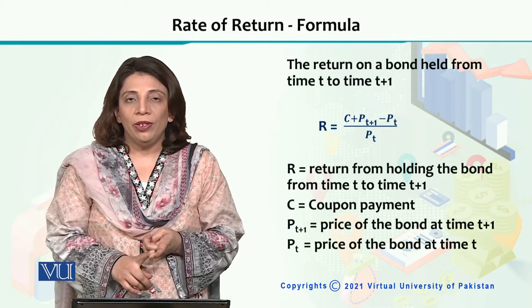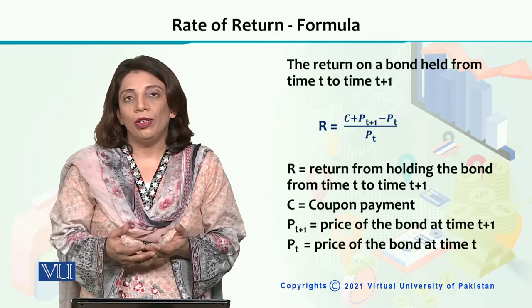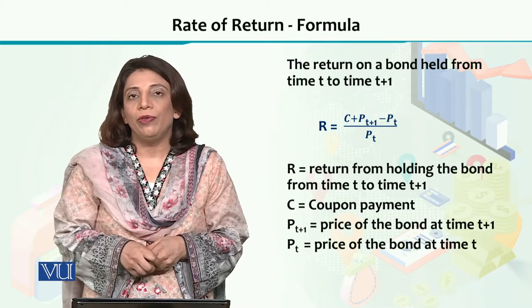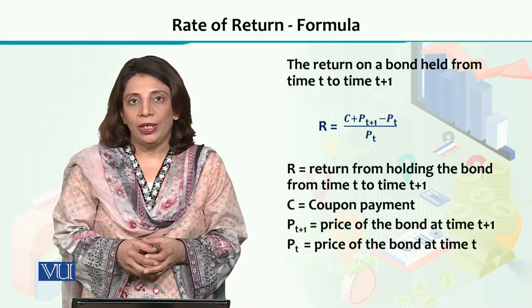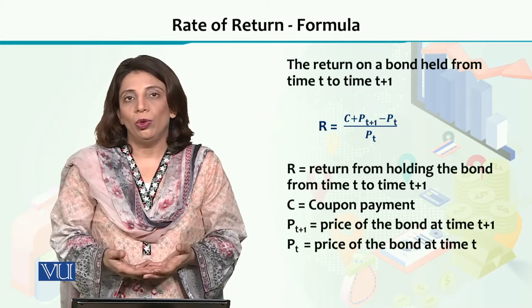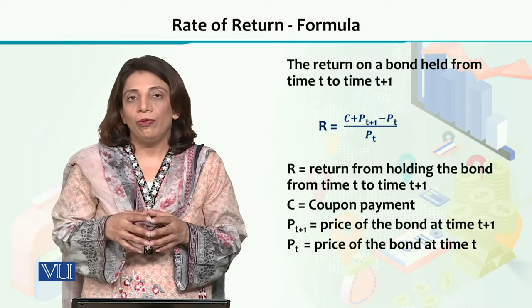The second one is the current price of a bond or the financial instrument for which the rate of return is to be calculated. And the third and last thing is the initial price at which the bond has been sold or purchased in the beginning of the time period for which the analysis is being done.